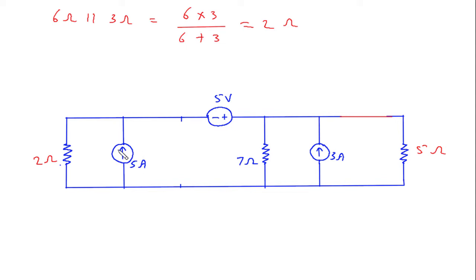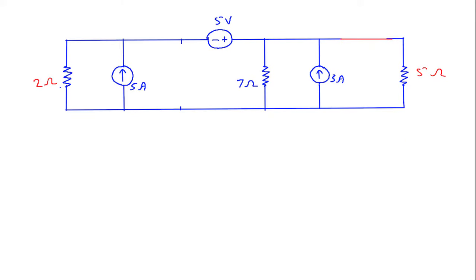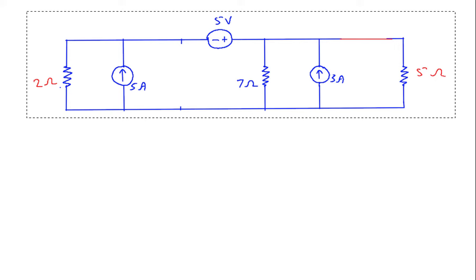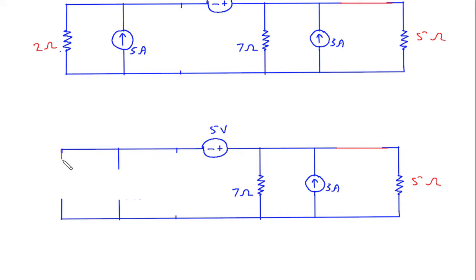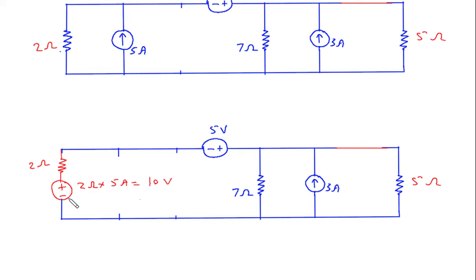Now we can convert this current source into its equivalent voltage source. We will shift this resistor to the upper side. The direction of current is upward, so this terminal will be positive and this will be negative. This voltage source is equal to resistance into current: 2 Ohm into 5 Ampere, so 2 into 5 is 10 Volt.